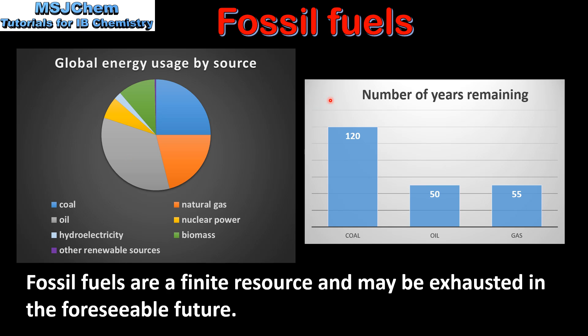The chart on the right shows the number of years remaining for coal, oil and gas. Coal has approximately 120 years remaining, oil 50 years and gas around the same. Therefore a major disadvantage of fossil fuels is that they are a finite resource and may be exhausted in the foreseeable future.